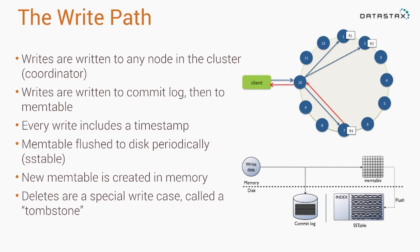Once a write request hits an individual node, two things happen. The first is that the write — that mutation — gets written to something called a commit log. The commit log is an append-only data structure, so it's doing sequential I/O, which is going to be very, very fast even on spinning disk type drives.